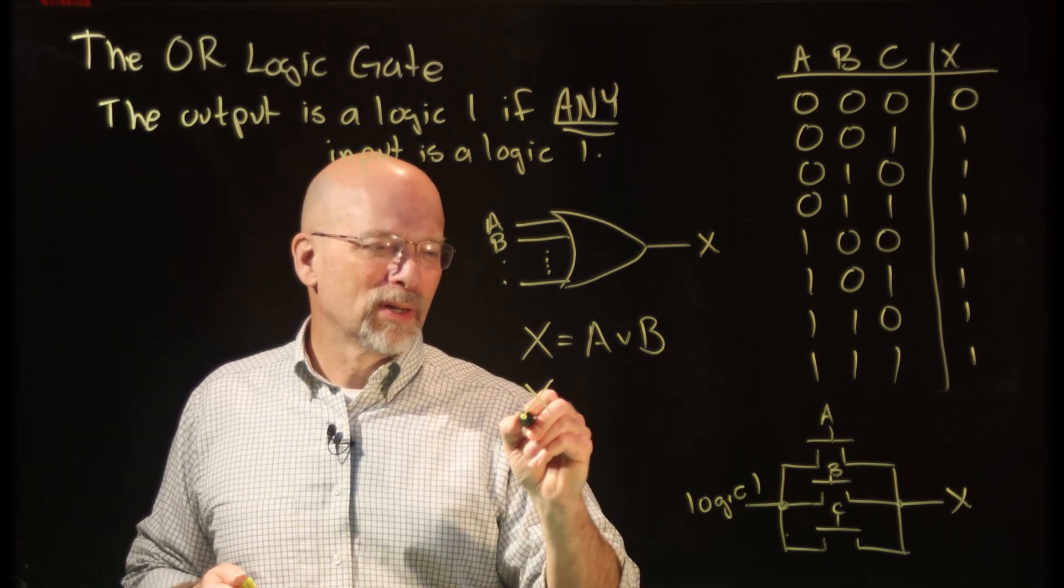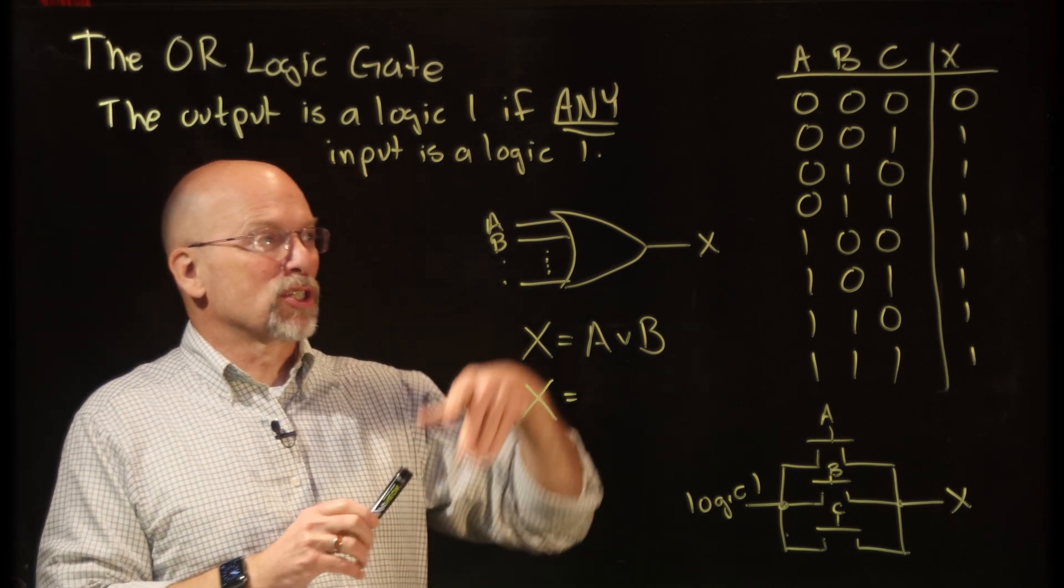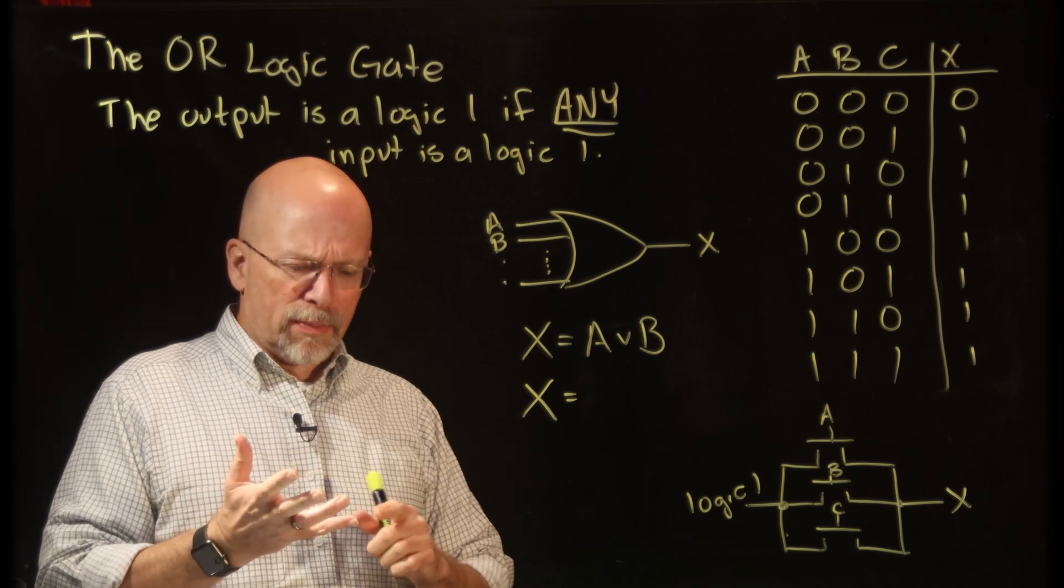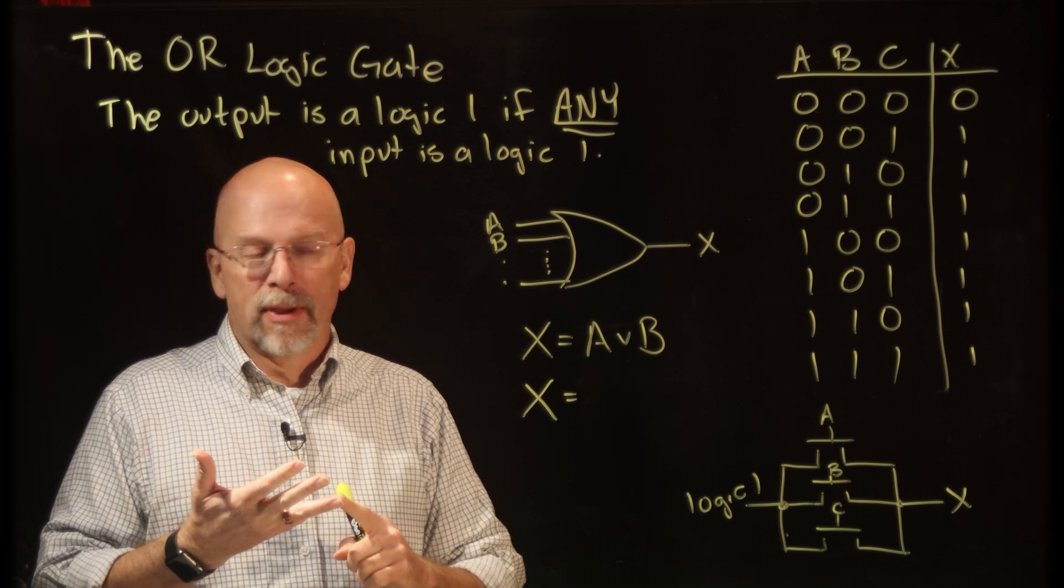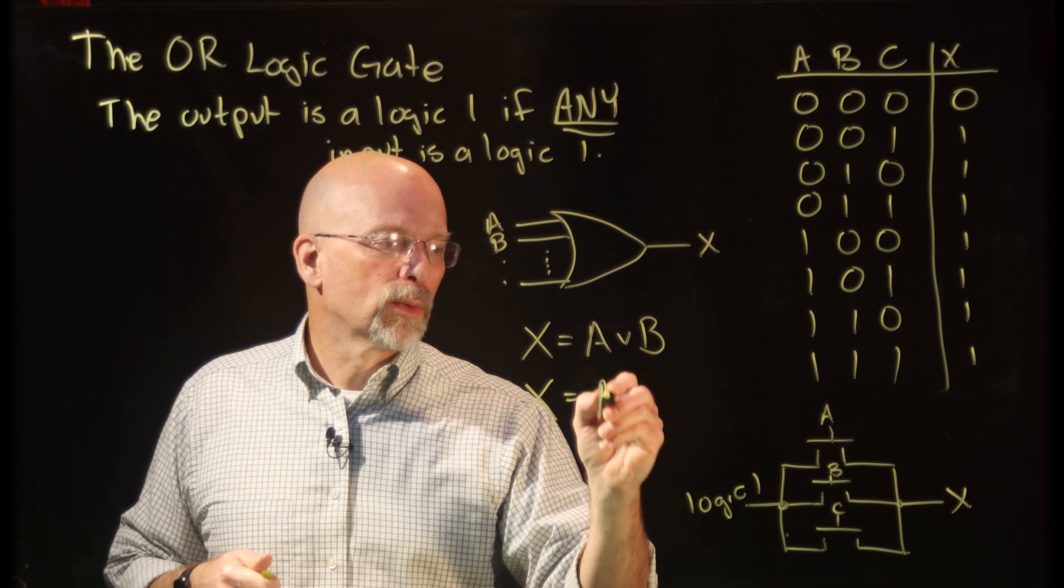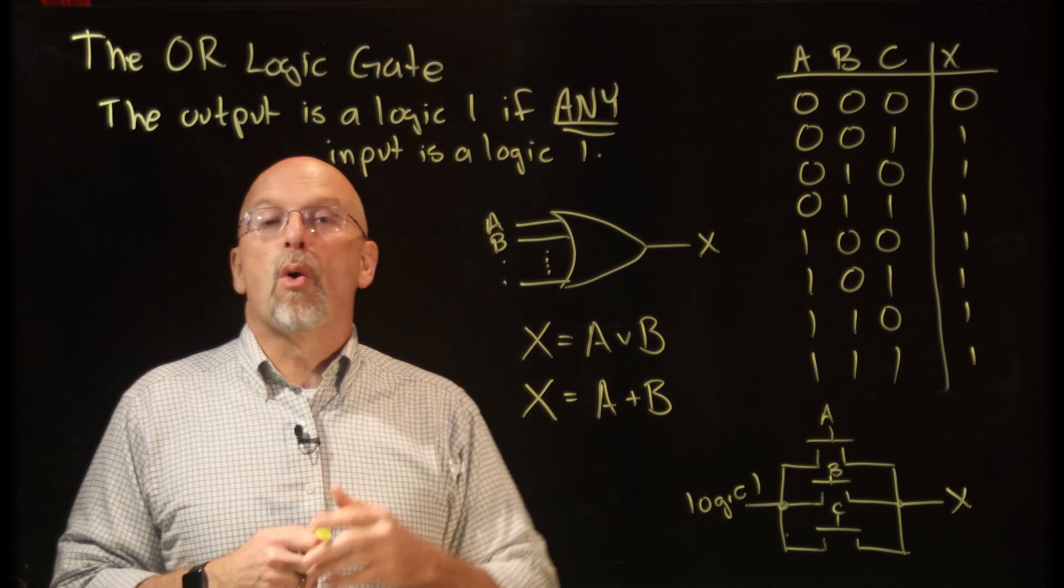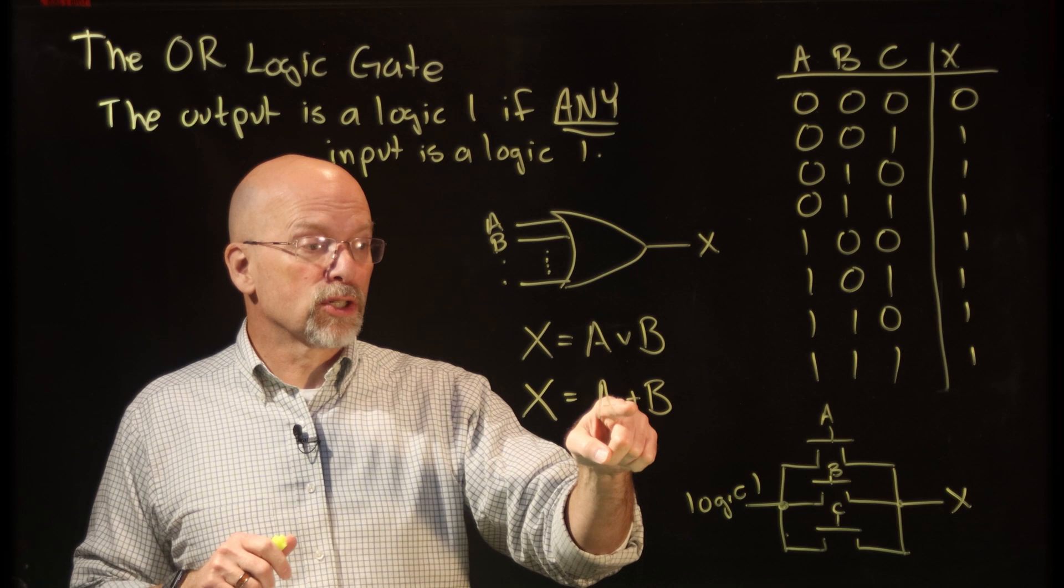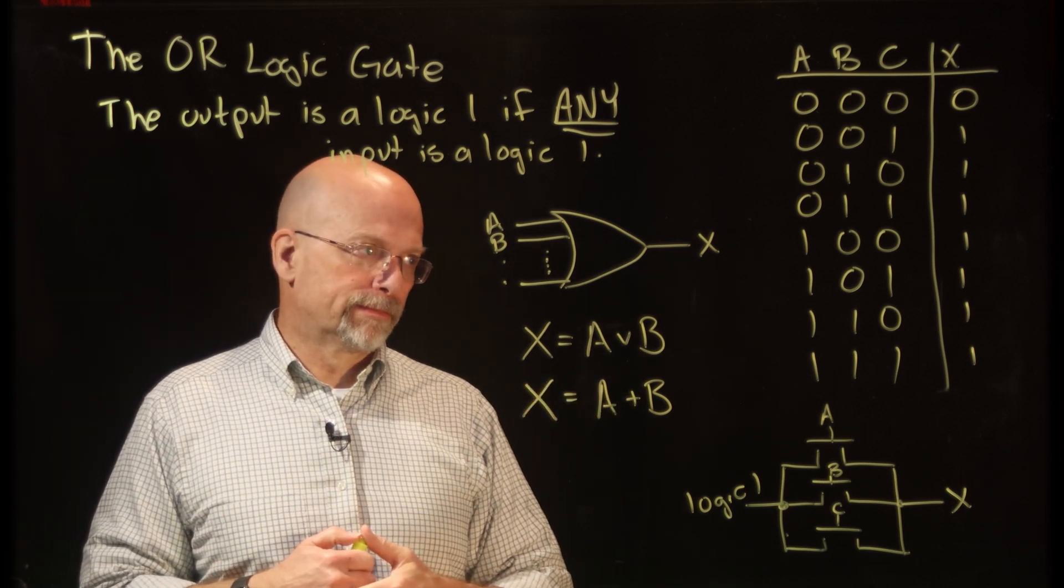Because as I've told you before, later on, whenever we start doing design of Boolean expressions by taking a truth table and converting it to a Boolean expression, we're going to use something called a sum of products expression. We might occasionally even use a product of sums. That term sum, that refers to the OR. And so frequently, you will see the plus sign used to represent the OR operation. So in the case of this class, we're going to use that plus sign in order to represent the OR operation.